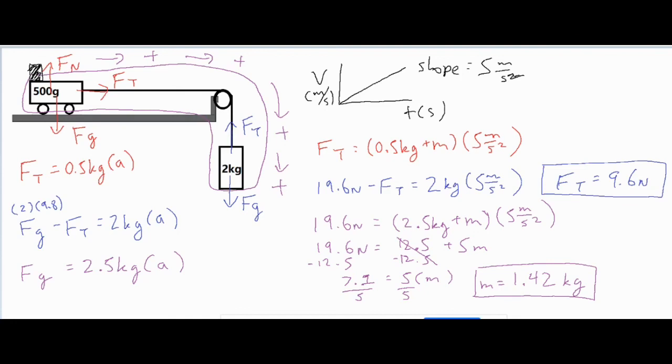We could have also found that same FT by using our red formula over here, which wasn't really necessary. But if you wanted to, you could have took this M, that 1.42, put it over here, 1.42 plus 0.5 is 1.92. And then 1.92 times 5, you would still get 9.6 Newtons.